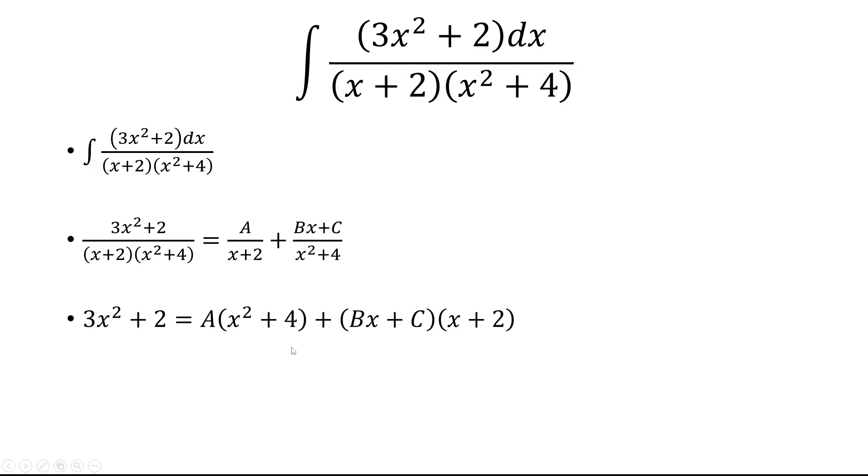Notice there's three unknowns, so we need to plug in three values for x. The first value is to make x equal negative 2, so that cancels out the second term here. And so we have on the left 14 equals 8A, which means A is equal to 7 over 4.